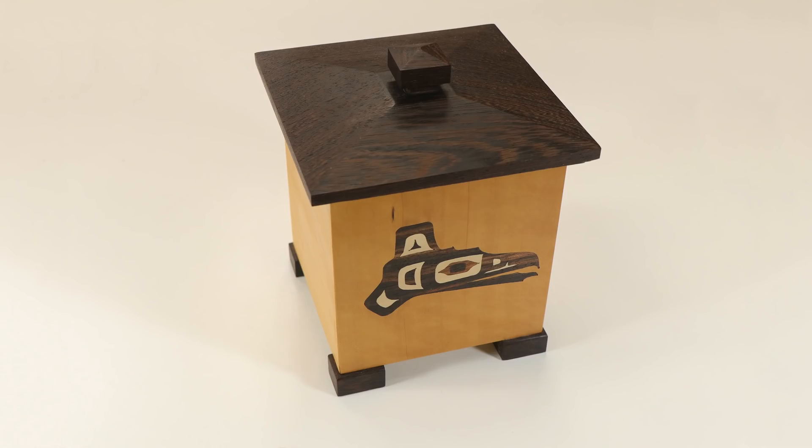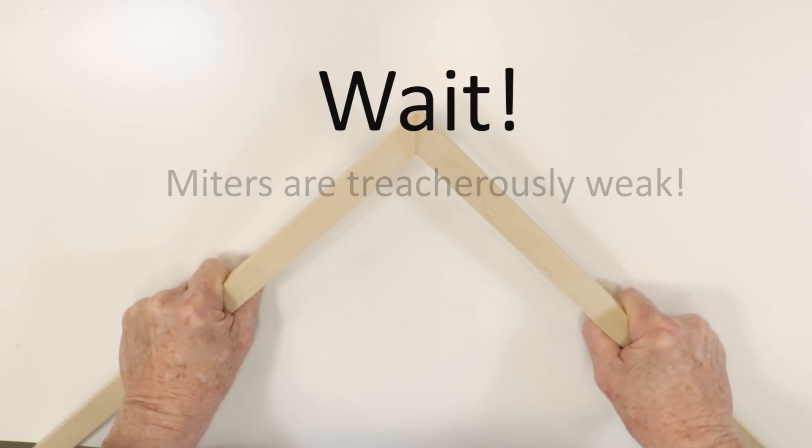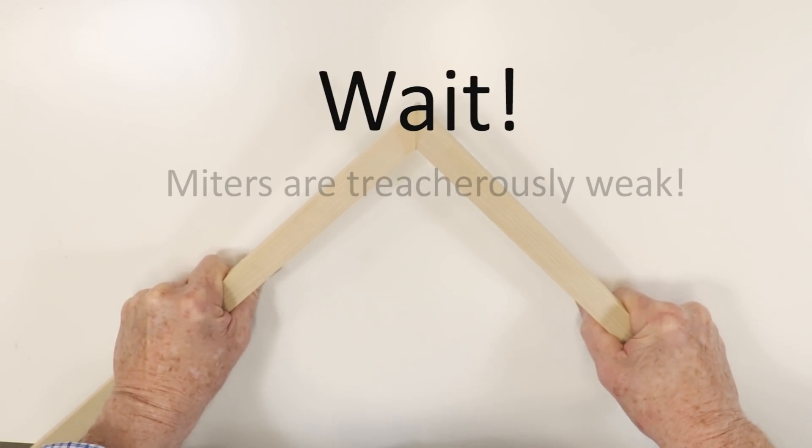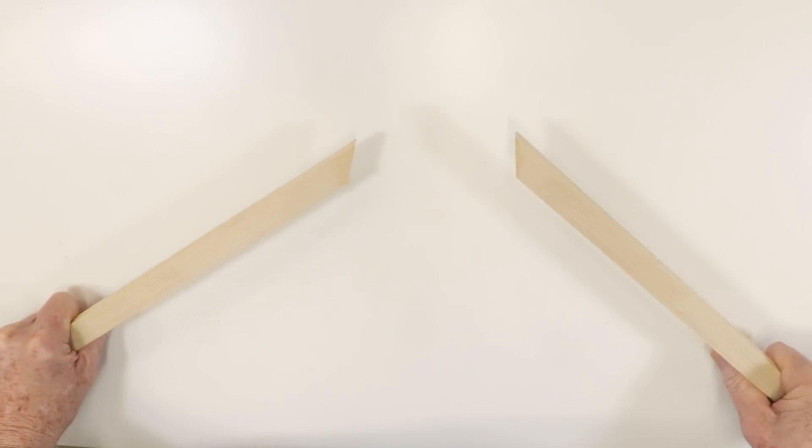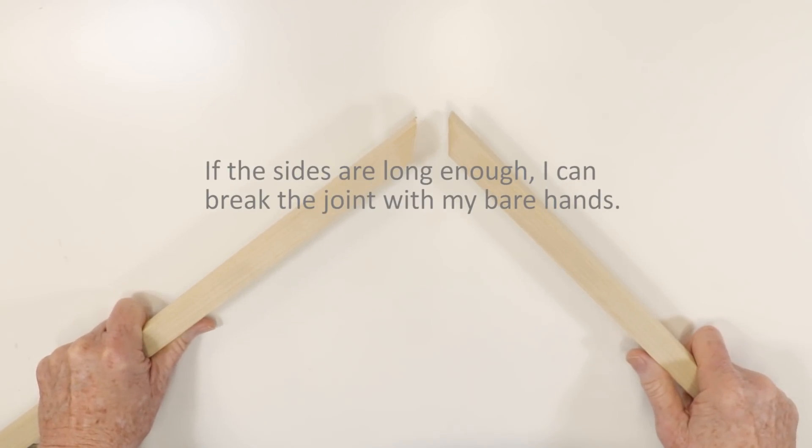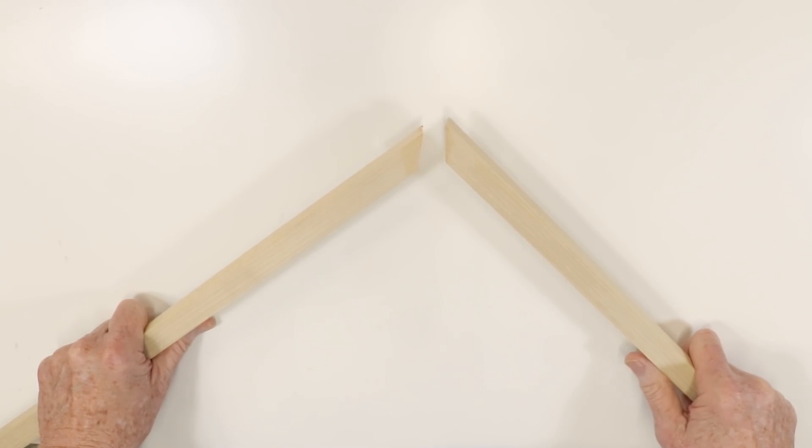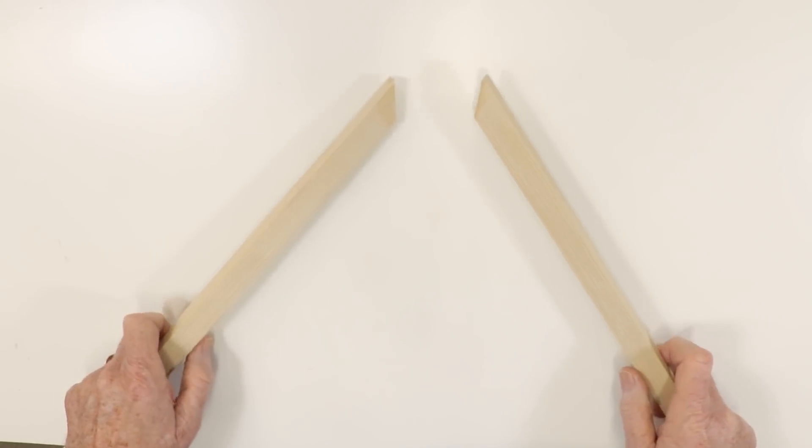But everyone knows that miter joints are dangerously weak joints. If you use them, you really need to reinforce the joints with splines of some type. The concept that miter joints are inherently unreliable is repeated over and over again by experienced woodworkers. Why? Why do these joints sometimes fail?